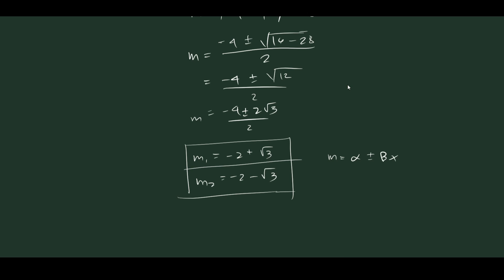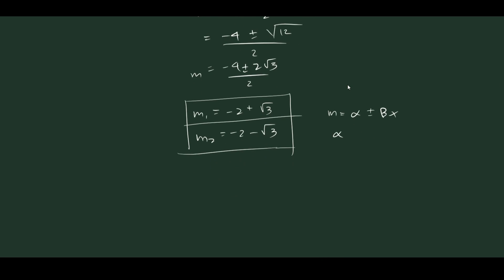So if we take a look at our roots here, our alpha is equal to negative 2 and our beta is equal to square root of 3.